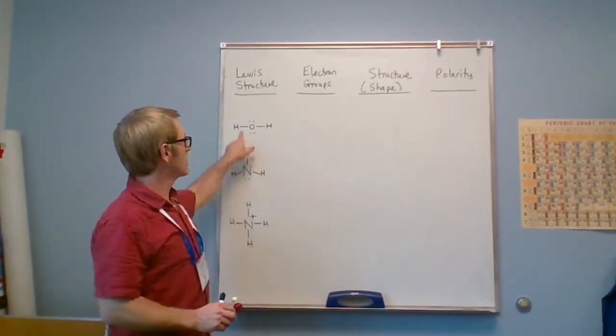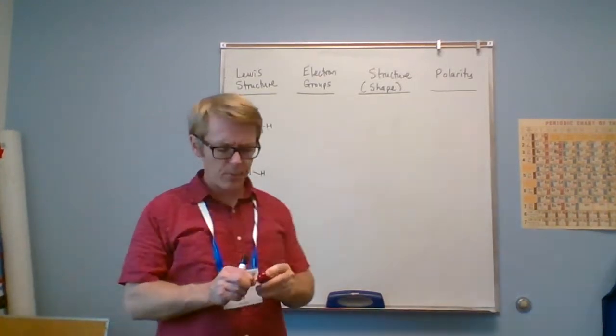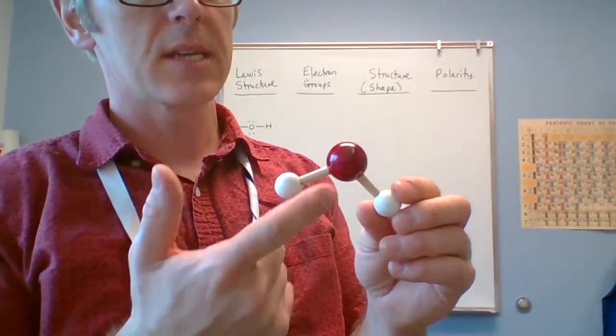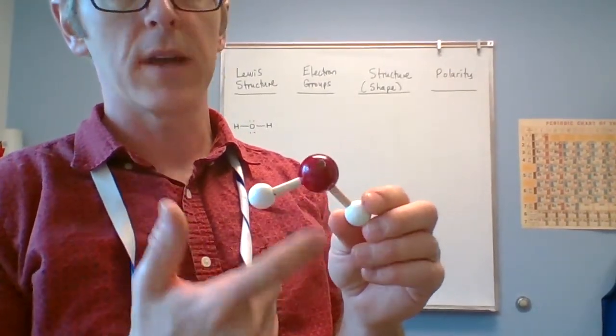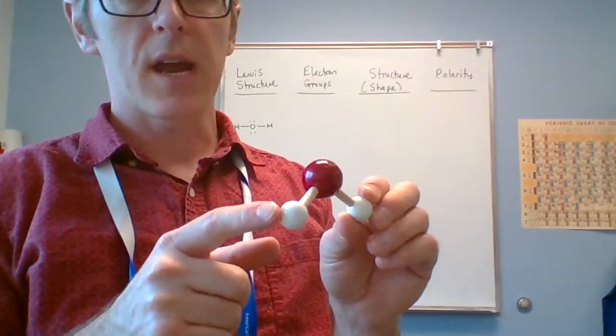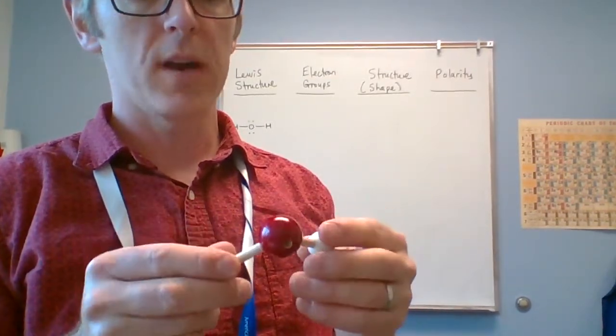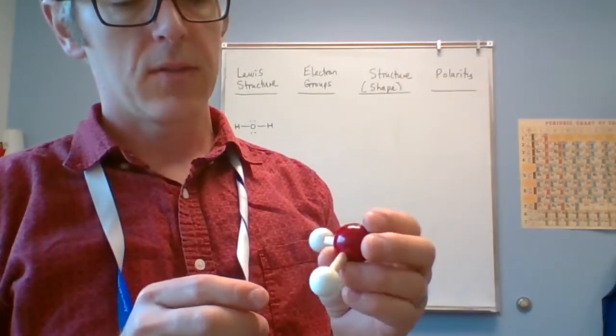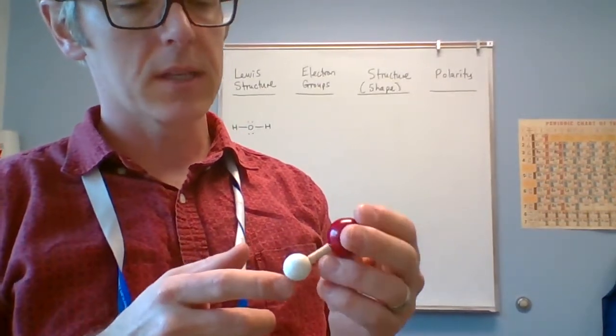To start with we're going to look at a water molecule. Now if you buy molecular modeling kits they typically come like this and you read the instructions - it says for an oxygen atom use the red sphere and for hydrogen atom use the white spheres. So whereas elements in reality don't have any color, there's typically common coloring schemes used for the molecules that you buy in a kit.